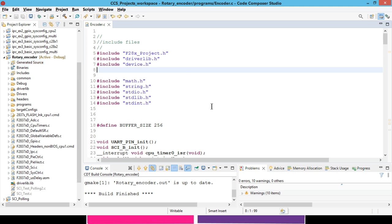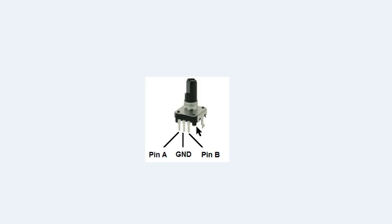Before starting, we will see how the rotary encoder looks and what the circuit connections are to interface it with the C2000 microcontroller. This is the rotary encoder, which has three pins: pin A, pin B, and the middle ground pin. These need to be connected with the C2000 microcontroller GPIO pins.